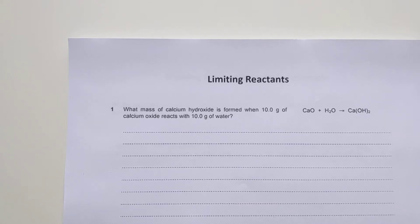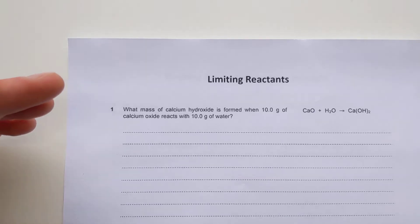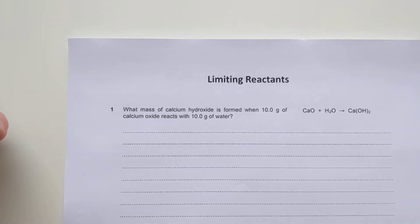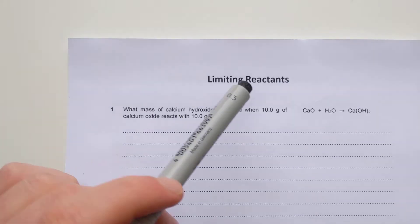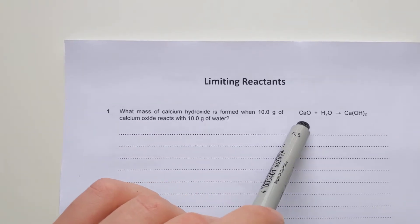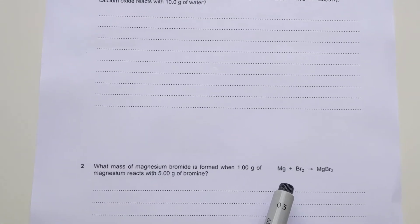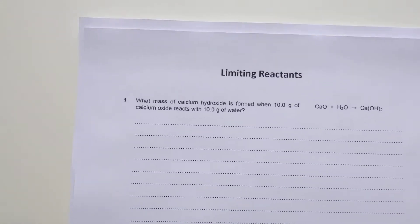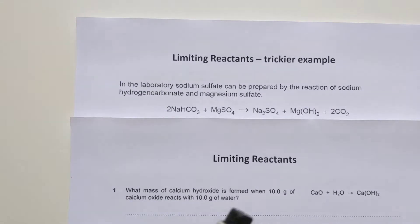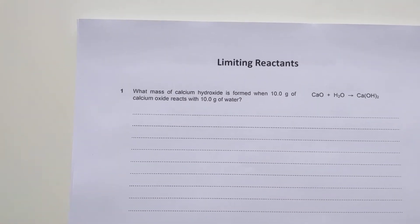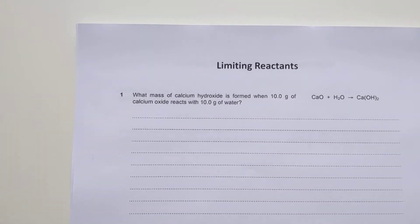Here's a little walkthrough of the chemistry questions you've been sent. Obviously have a go at them first before watching this video, but hopefully you can check you've got the correct working out and answers. The first two questions are limiting reactant questions - standard ones where within the equation it's all one-to-one ratios, which makes things a bit easier. We'll use the table method as that's the easiest way to cope with them.